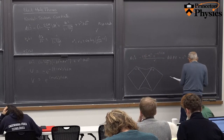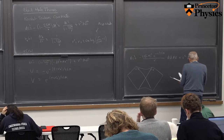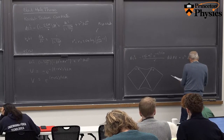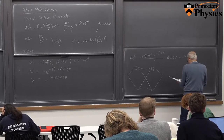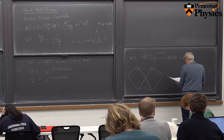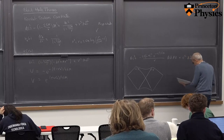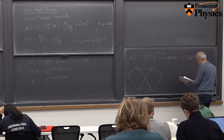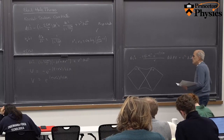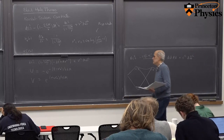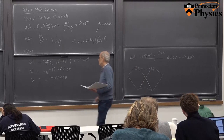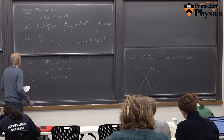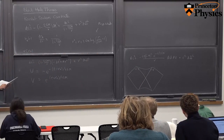In this setup, r is a function of u and v that we get by inverting these formulas.